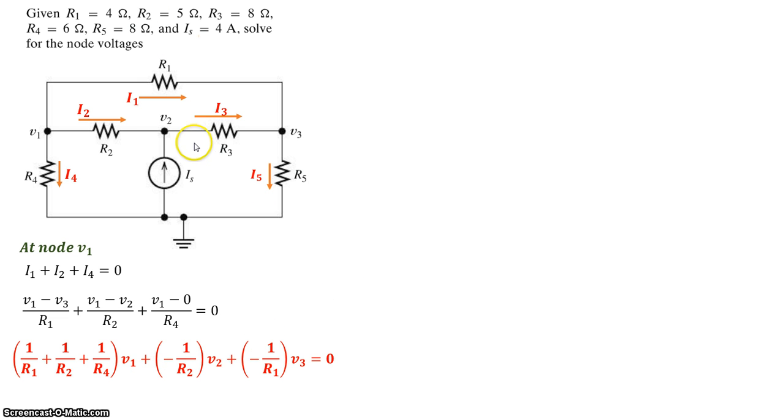Now, let's take a look at node V2. At node V2, the current coming in is I2, and from the current source Is, and the current leaving that node is I3. So we get I2 plus Is is equal to I3. Now let's bring I3 on the left hand side and move Is to the right. So what we get is I2 minus I3 is equal to minus Is.